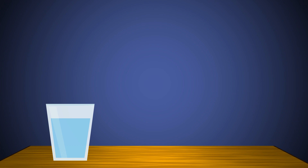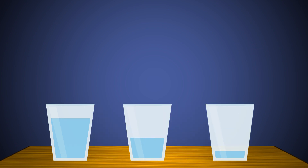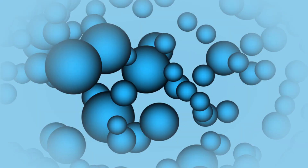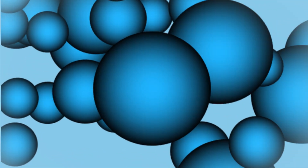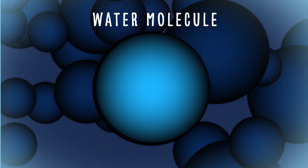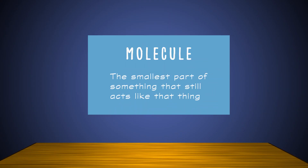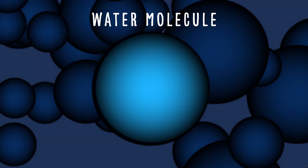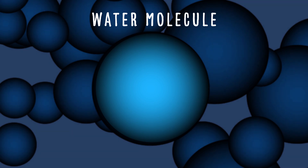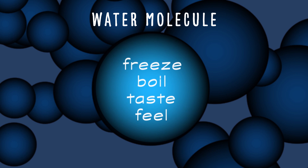Here's a glass of water. Water takes up space and can be weighed. Did you know that if we divided water into smaller and smaller parts until we got to the smallest, tiniest part, we would have one single water molecule? A molecule is the smallest part of something that still acts like that thing. A single water molecule is tiny and too small to see without using other tools, but it's still water and can freeze and boil and taste and feel just like water.